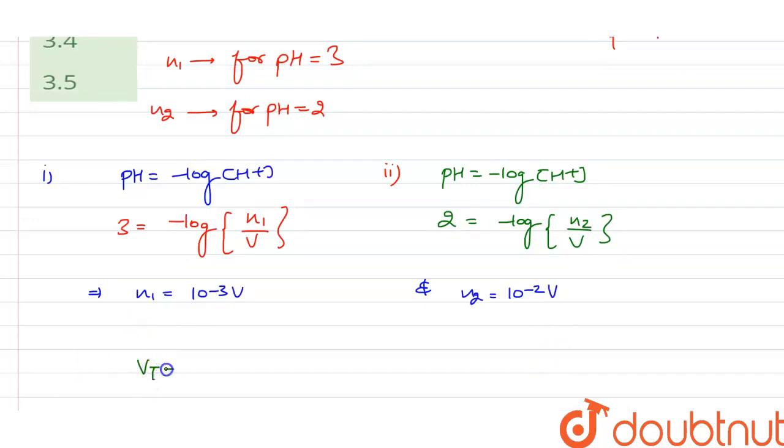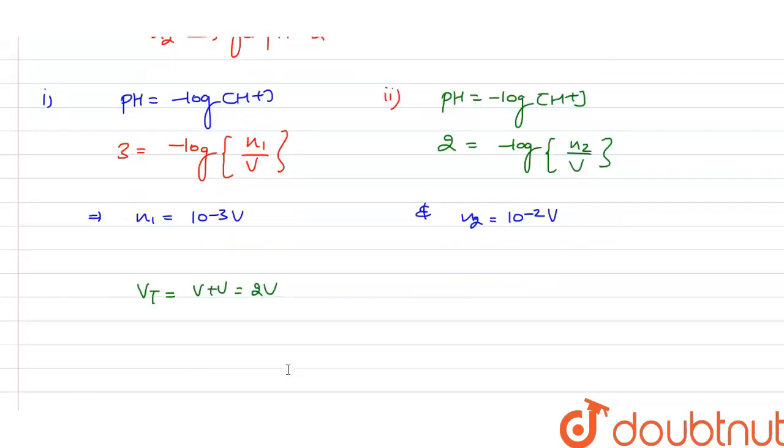Now the total volume of the solution will be V plus V, that is 2V. Now we have to find the H+ ion concentration.